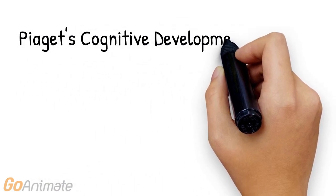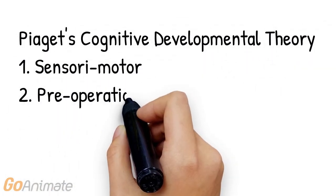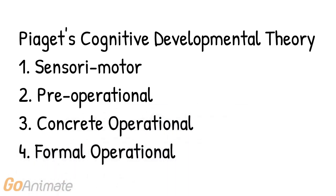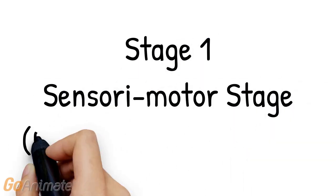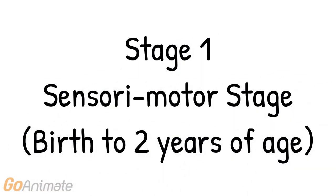The four stages of Piaget's cognitive developmental theory are: stage one, the sensorimotor stage; stage two, the pre-operational stage; stage three, the concrete operational stage; and stage four, the formal operational stage. Stage one is the sensorimotor stage and occurs from birth to age two.